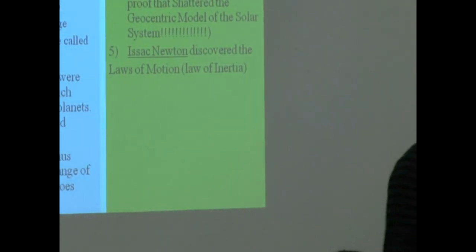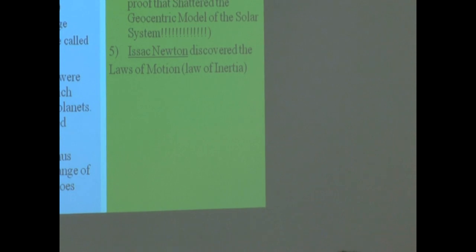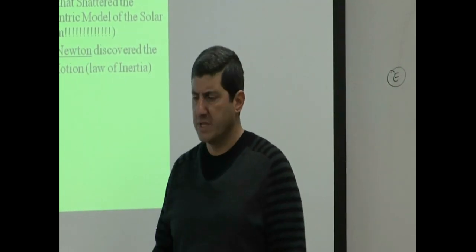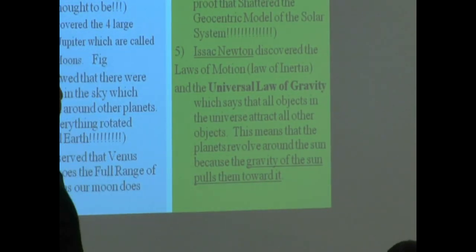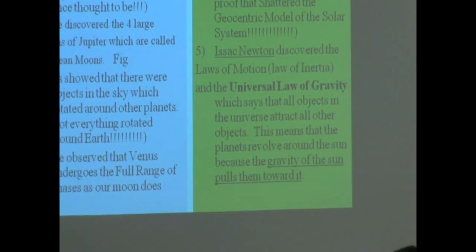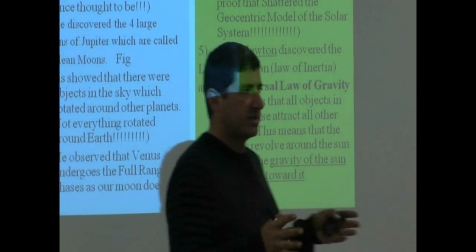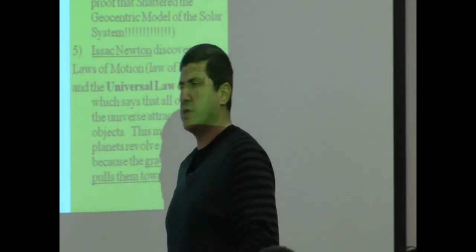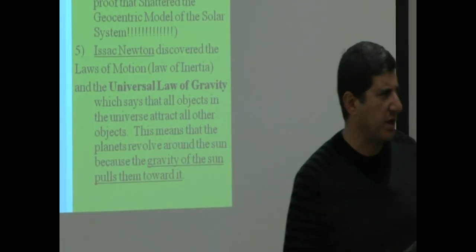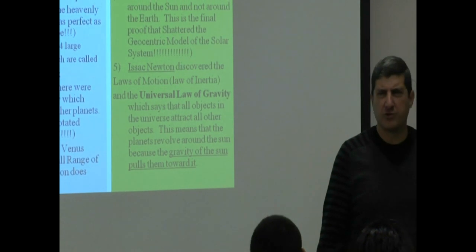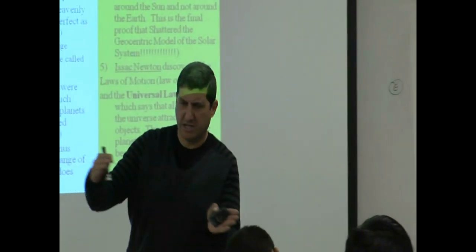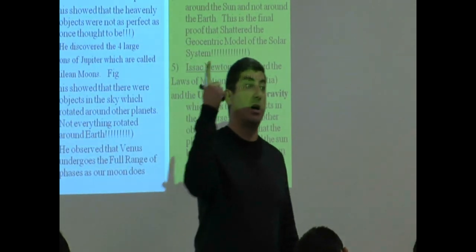After Galileo dies, Isaac Newton is born. Isaac Newton, of course, discovers the law of inertia and the other laws of motion. His law of inertia says that everything has to go in a straight line — that's the natural motion of something. So then he says, planets don't go in a straight line. What's making them go around the sun? Something's got to be causing them to go around the sun. Aha — gravity.